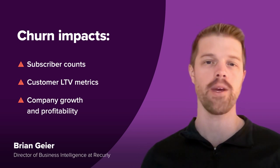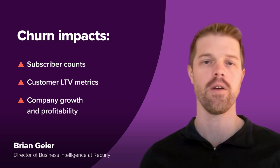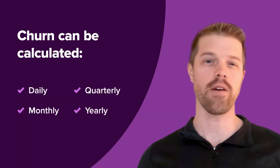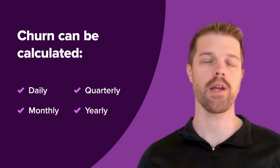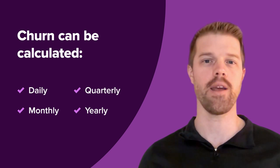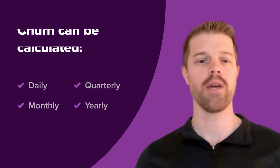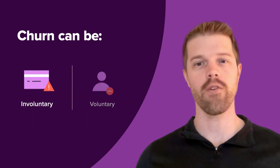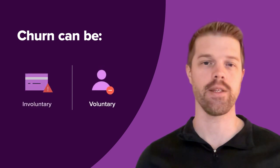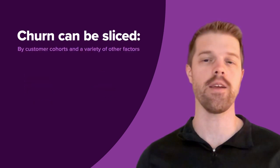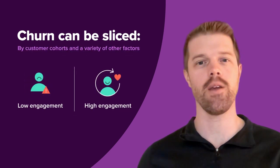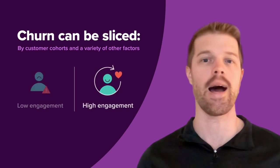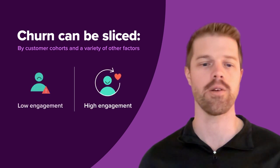Obviously, it's crucial to pay attention to churn, but there are many ways to look at it. Churn is usually calculated monthly, but can also be calculated daily, quarterly, or on an annual basis as well. Additionally, churn can be calculated for both involuntary and voluntary reasons. And finally, it can be sliced for different cohorts such as low engagement and high engagement cohorts.